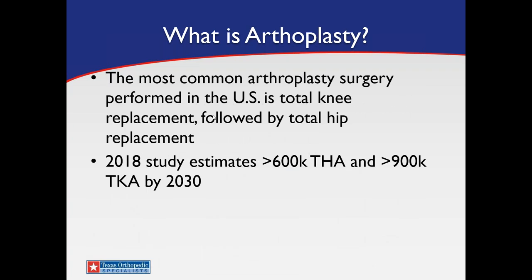The most common arthroplasty or joint replacement surgery performed in the United States is the total knee replacement, followed by total hip replacement. A recent study from 2018 estimates that by 2030, over 600,000 total hips and over 900,000 total knees will be performed in the U.S. Those numbers range anywhere from 1.5 million to 3.5 million procedures. The take-home is that arthritis is a widespread disease that affects many of us.